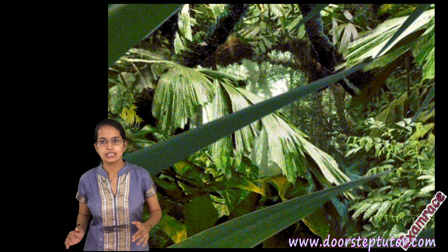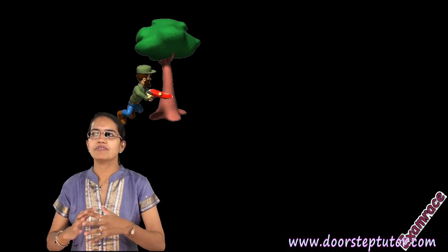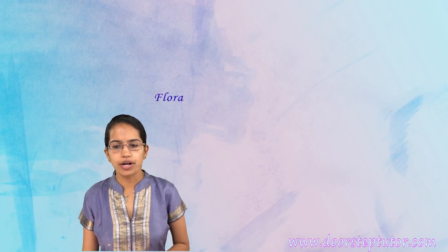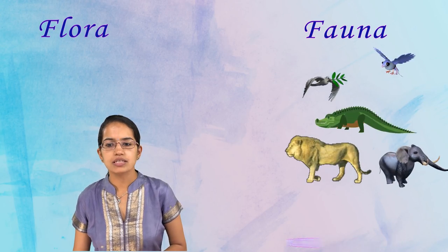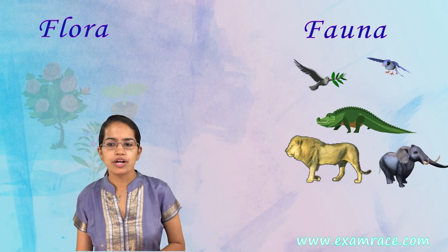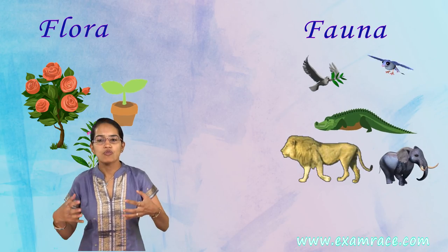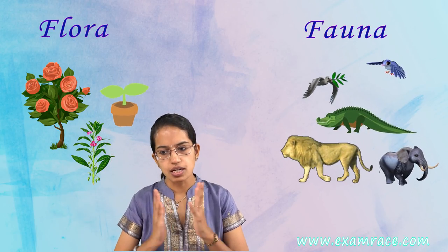There is a huge biodiversity that exists in the forests across India and across the globe. Whatever kind of organisms live here are classified under two heads: flora and fauna. Fauna means the animals and flora means the plants. So flora is the plants that we talk about and fauna is the animals.